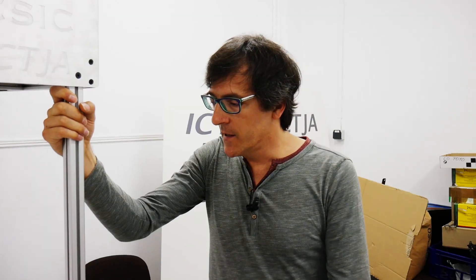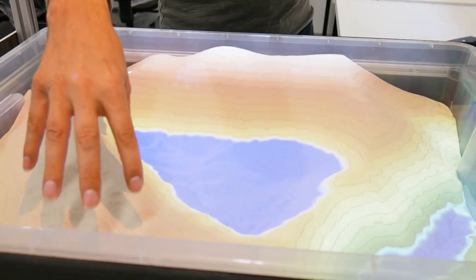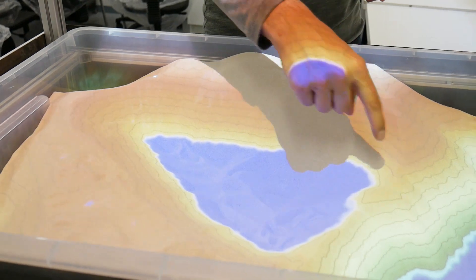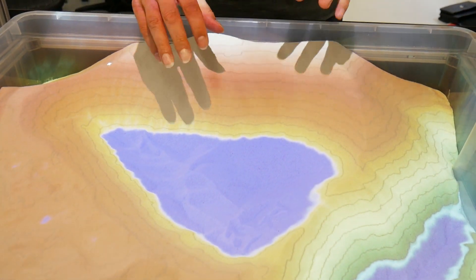So this is the augmented reality sandbox that we have modified and we are going to make a practical example of the modifications that we performed. So this initial setting is representing the Pyrenees, the Iberian chain and the Catalan coastal ranges and this is meant to be the Ebro Basin, Ebro sedimentary basin.